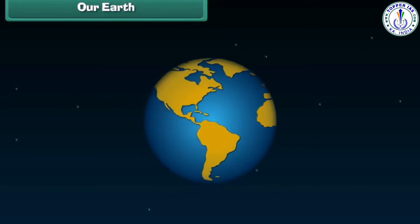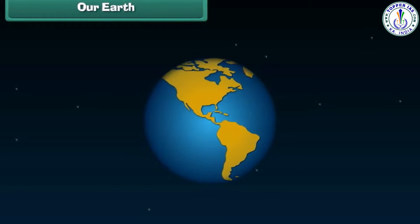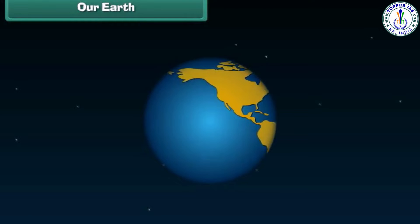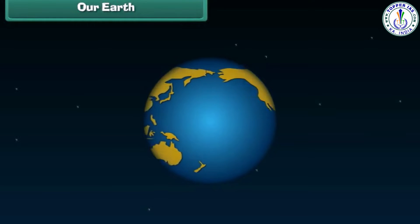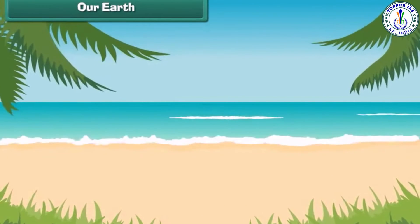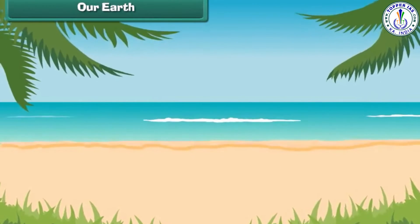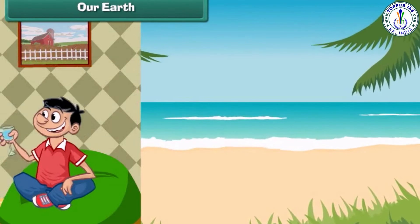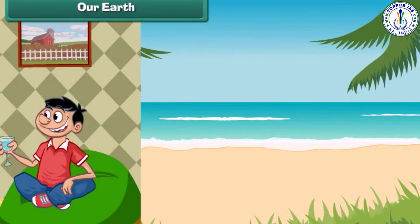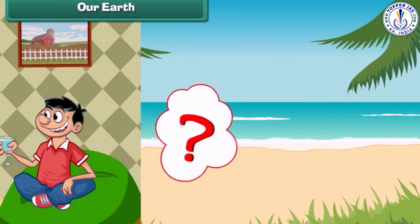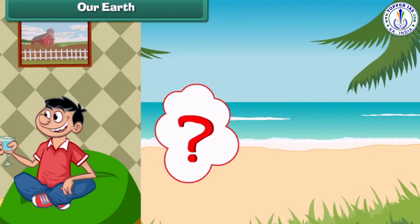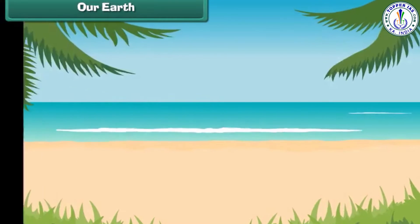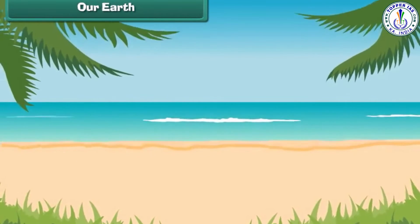Friends, we live on a planet called Earth, which is round in shape, just like an orange. It has a sky above and oceans filled with water below. We breathe in air and drink water daily. But do you think that we can live without air and water? No, it is not possible.